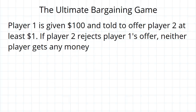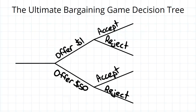This is a game that involves timing. Player one gets to make the first choice — they are given a hundred dollars and told to offer player two at least one dollar. Player two then gets the choice to either reject the offer, so nobody gets any money, or they can just accept it. We'll represent the outcomes of this via a decision tree.